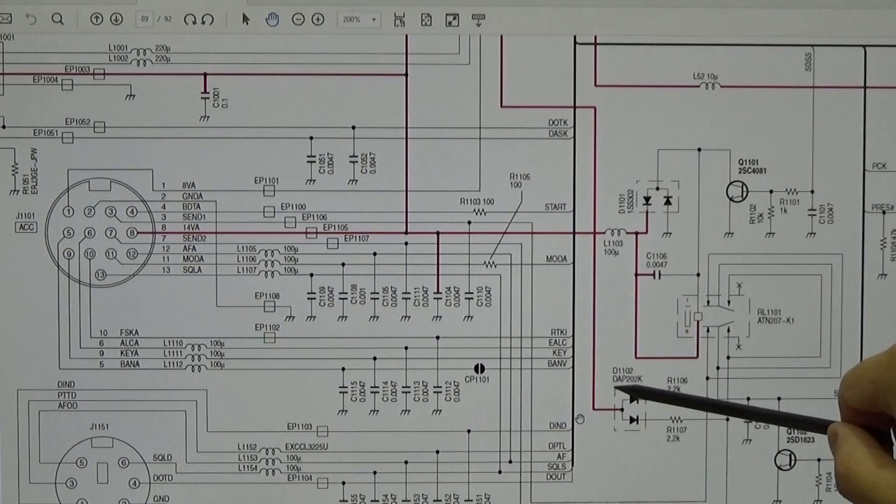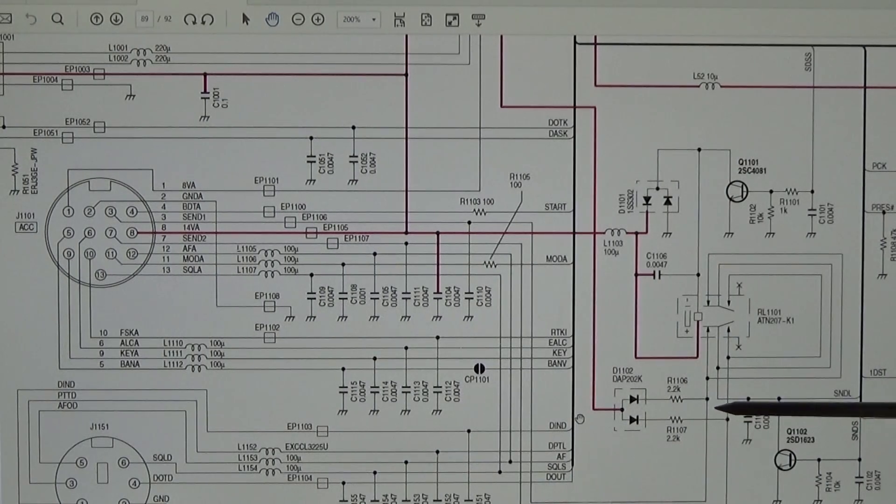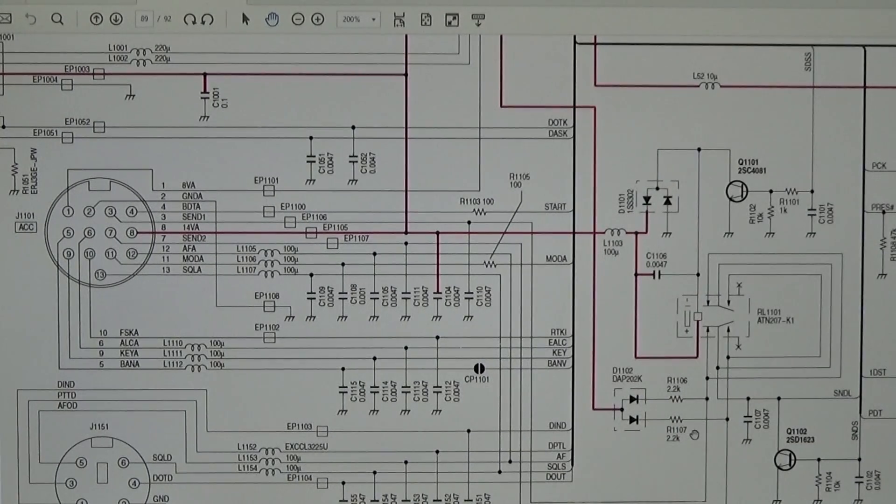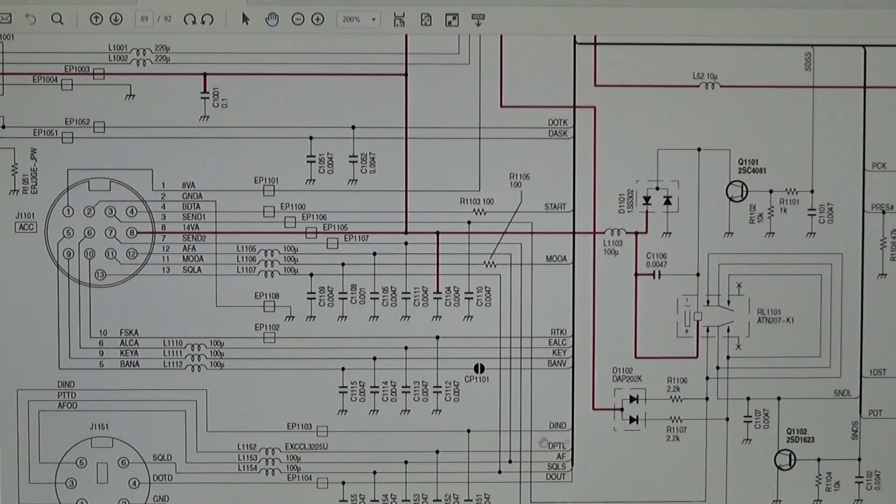We have seen 7.3 volts present at pin 3 and that is right because we have a supply voltage connected to that pin. That is the 8 volt voltage line.